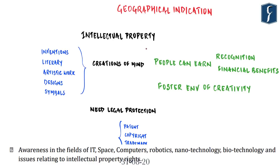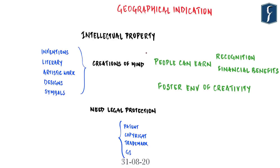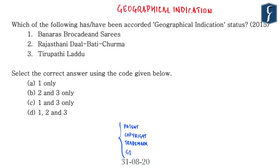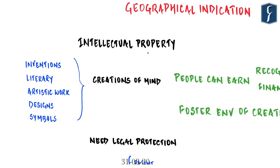In UPSC Prelims 2015, a question was asked about which of the following had been accorded Geographical Indication status — with Banaras brocades and saris, Rajasthani dal bati churma, and Tirupati laddu as options. Since Geographical Indication is a kind of intellectual property, let us briefly go through what intellectual property itself is. When people invent things, write something, create artistic works or designs, or provide a symbol for an industrial house, these are creations of their mind. We want to recognize people for their creativity and allow them to earn financial benefits, to spur innovation and foster an environment of creativity.